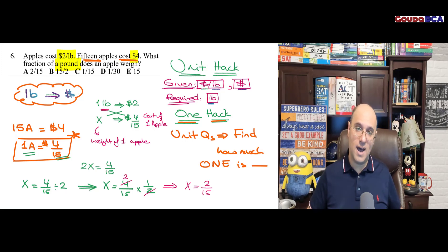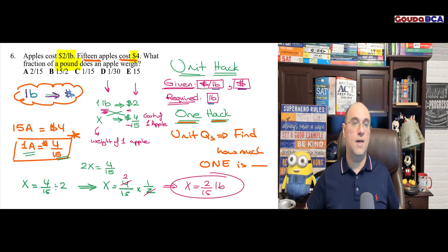2 over 15 what? Pounds. Because in cross multiplication, remember, everything here is in pounds. Everything here is in dollars. So x equals 2 over 15 pounds. And that is my answer right away.